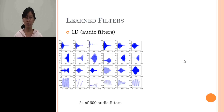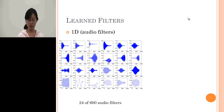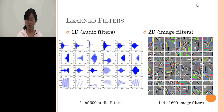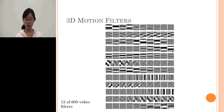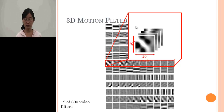Here we show the learned filters from three modalities. 24 filters learned from audio are shown out of a total of 600. Different filters capture different frequency and amplitude of the audio signal. For 2D image filters, we show 144 out of 600, and find that some learn edges with different orientations while others capture color information. For 3D motion filters, we show 12, each row corresponding to one 3D filter, capturing different transition and rotation information over time.